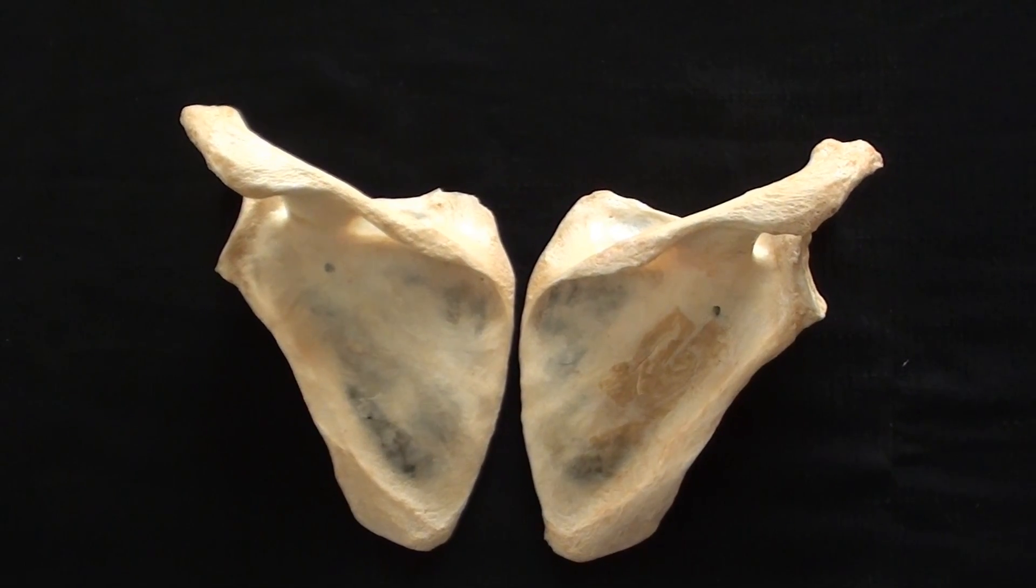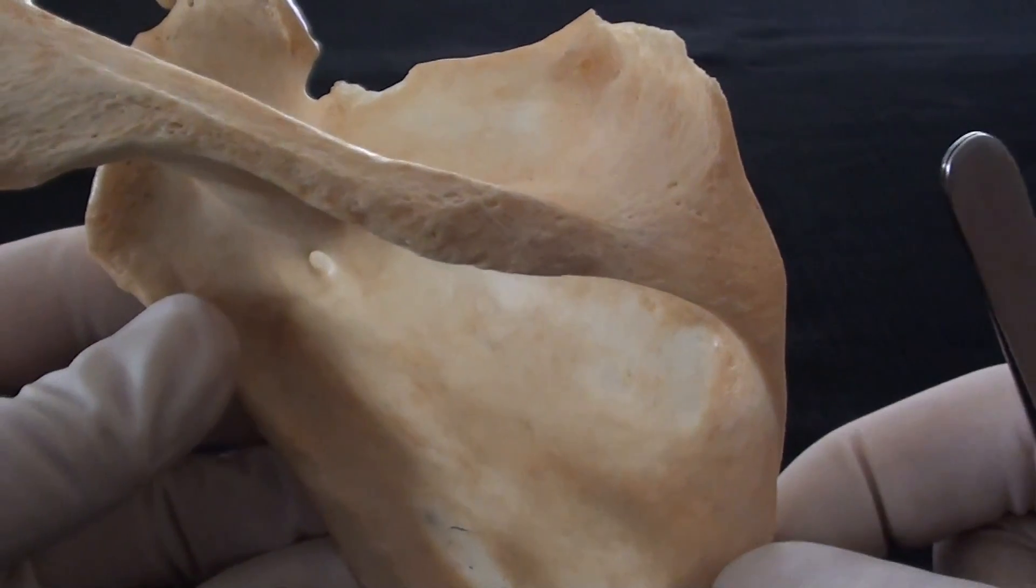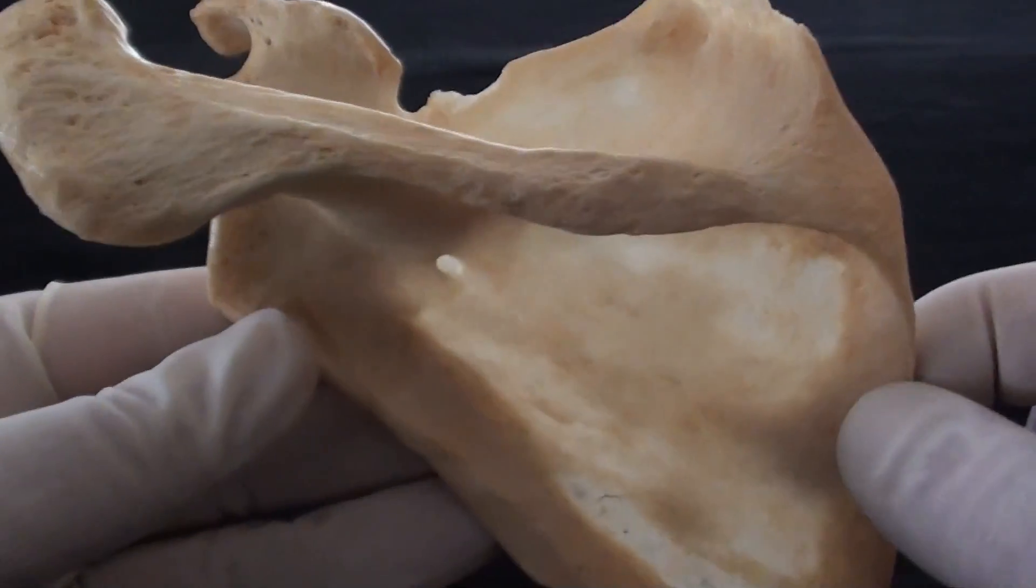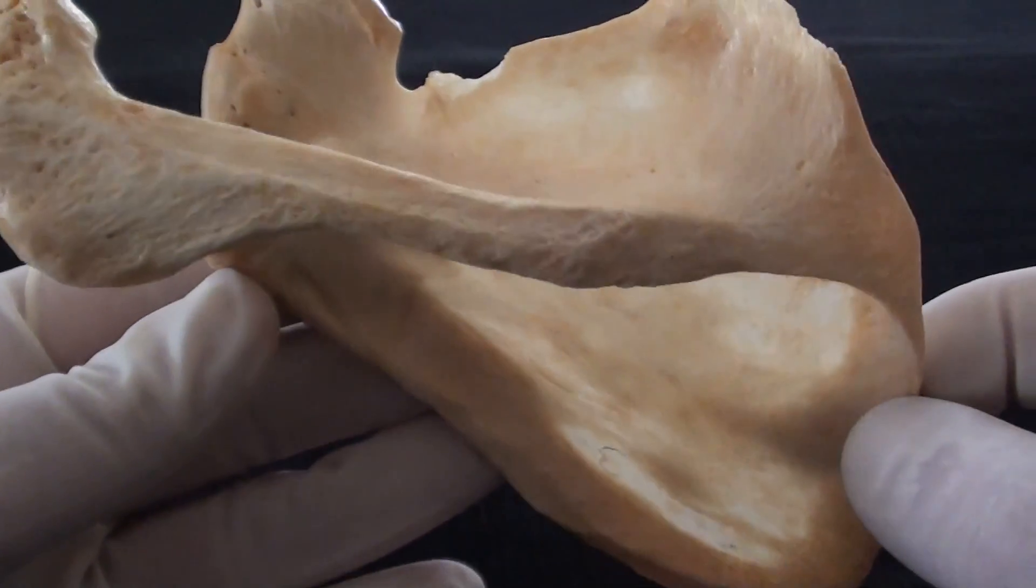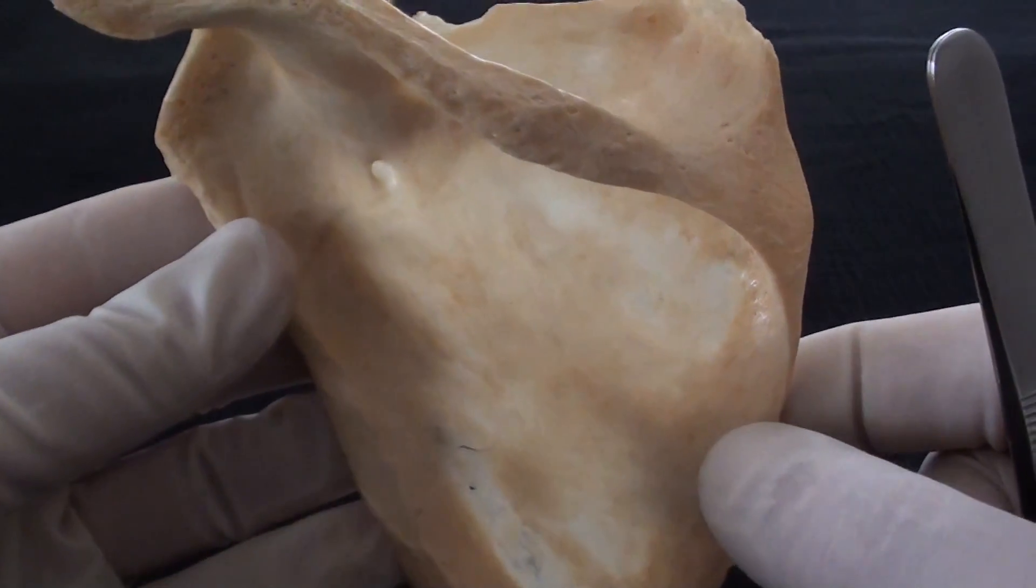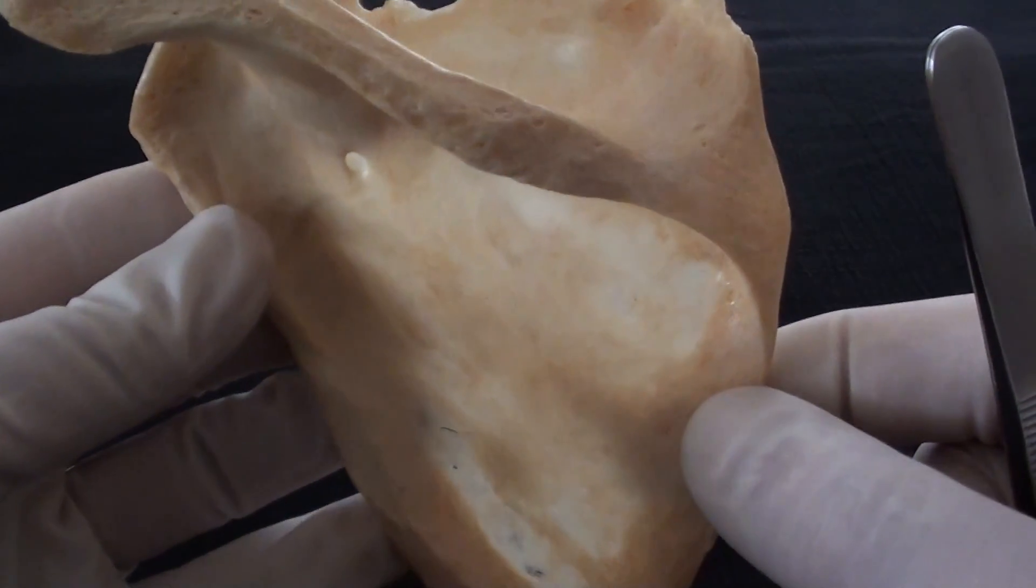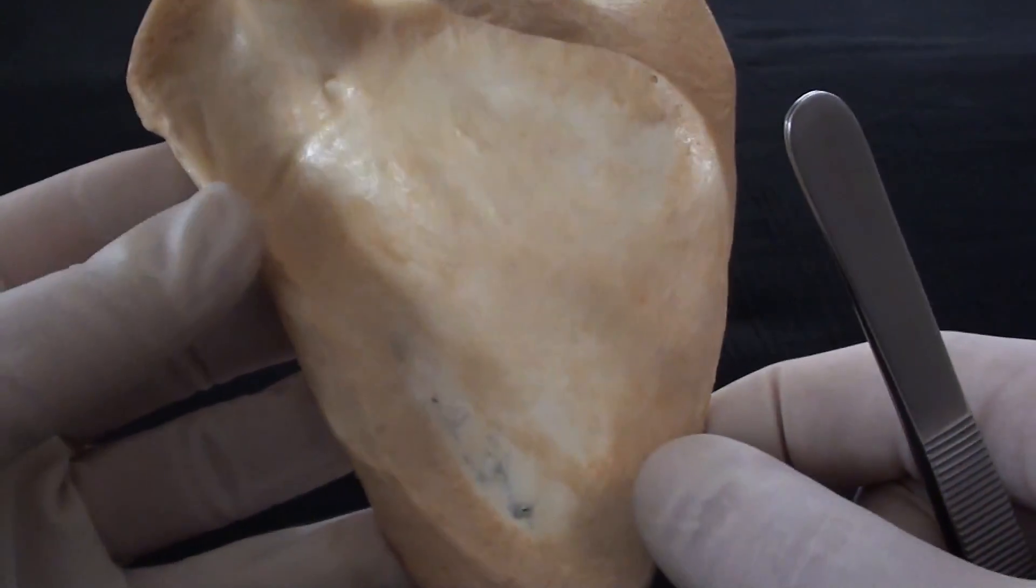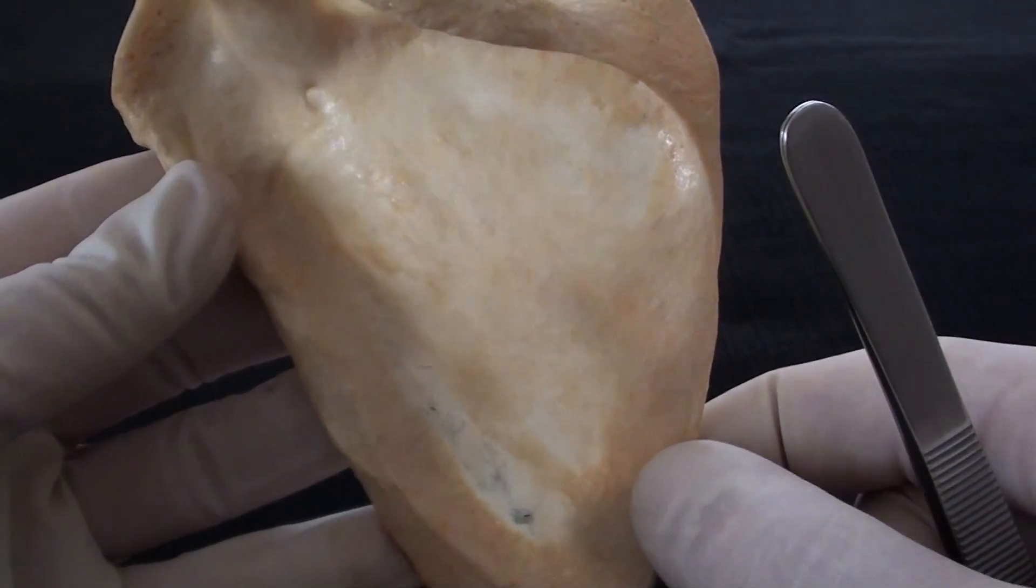The scapula. This is the scapula, also known as the shoulder blade. The one which is used for filming is from the left side. Scapula is flat, triangularly shaped bone that sits on the superior posterior aspect of the thorax.